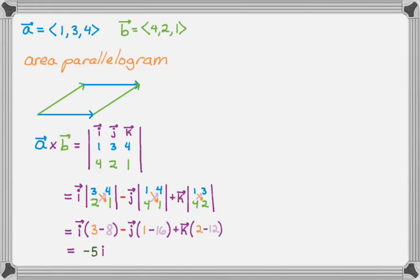So I can rewrite that. Negative 5i, minus negative 15j, minus 10k. And then I'm going to rewrite it in just component form. So negative 5, 15, negative 10.